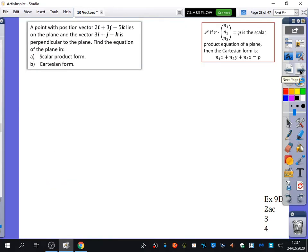A couple of examples here. It says a point with position vector 2, 3, minus 5 lies on the plane and the vector 3, 1, minus 1 is perpendicular to the plane. Find the equation of the plane in scalar product form and Cartesian form.